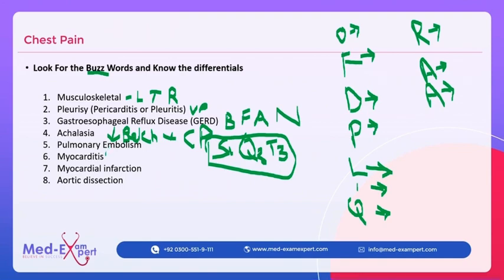If chest pain is not related to respiration, consider myocarditis, rheumatic fever, etc. For MI, think: tight squeezing chest pain, ECG changes, radiation, aggravating factors. Determine whether it is stable or unstable angina.